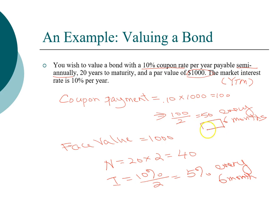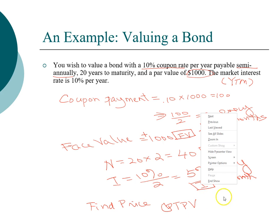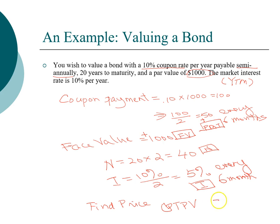Now we have all the information we need. Fifty dollars is our annuity payment, one thousand dollars is our future value — both are cash inflows. If you buy a bond you'll receive fifty dollars every six months and a thousand dollars at maturity. N is 40 periods and the discount rate is five percent. Go ahead and compute the price, which is the present value. The answer is a thousand dollars.